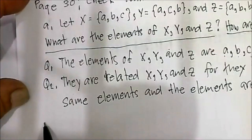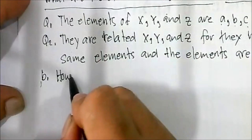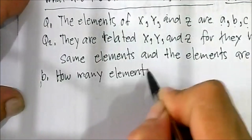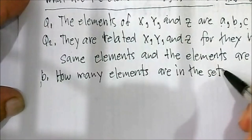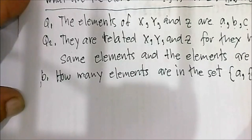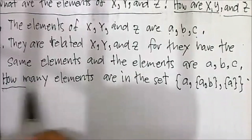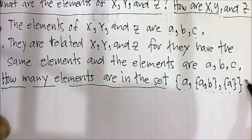Letter B: how many elements are in the set containing a, the set {a, b}, and the set {a}? How many elements are there in the set {a, {a,b}, {a}}?